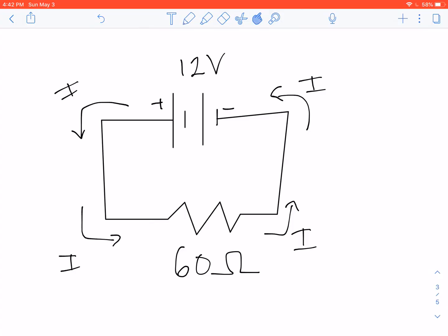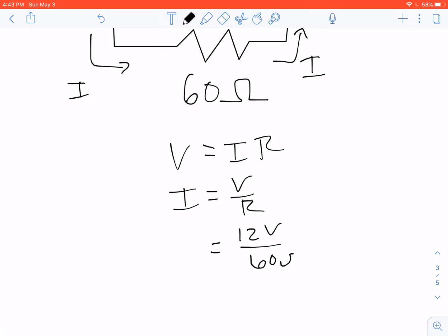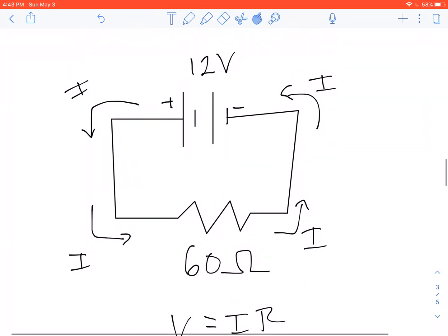Now how much current do we actually have flowing through this circuit? Well, we have our formula V equals IR, which we can rearrange to I equals V over R. We then plug in our V is 12 volts, and our resistance is 60 ohms. We divide, and we get 0.2 amps.